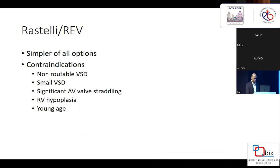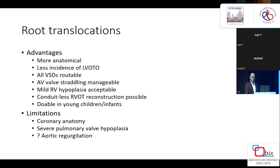However, there are several relative contraindications: non-routable VSDs, very small VSDs, AV valve issues, and significant straddling — though some groups manage with conal flap modifications. Significant RV hypoplasia — anything less than minus one Z-score — makes placing a tunnel inside the RV dangerous. Re-intervention risk is also a substantial concern with a large intraventricular tunnel.